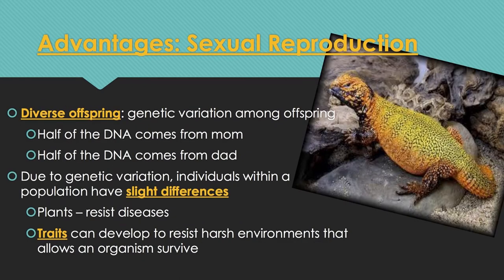There are some advantages to sexual reproduction. Probably the main advantage is diverse offspring — you get genetic variation. When two different sets of genes come together, half the DNA comes from mom and half from dad, and it's random which half comes from which parent, giving you variation. That genetic variation helps individuals in the population survive. For example, plants can better resist diseases, and variation can develop traits to resist harsh environments or help find a mate.